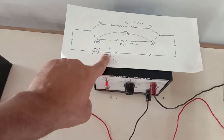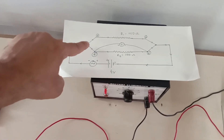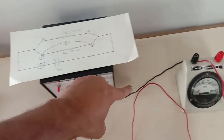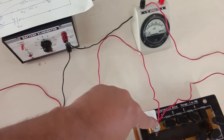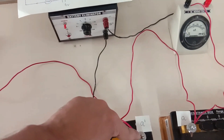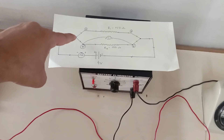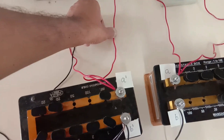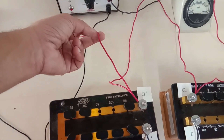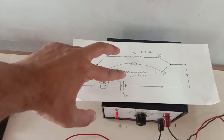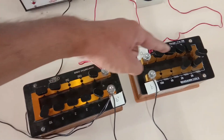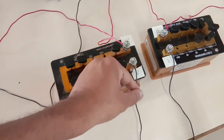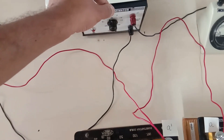Current flows out of the positive terminal of the battery, passes through the milliammeter, and splits up into both resistances. From point A, the current splits — some passes through resistance box one and the rest flows through resistance box two. Finally, both currents join together in the black wire and go back through the black wire into the negative terminal of the battery.